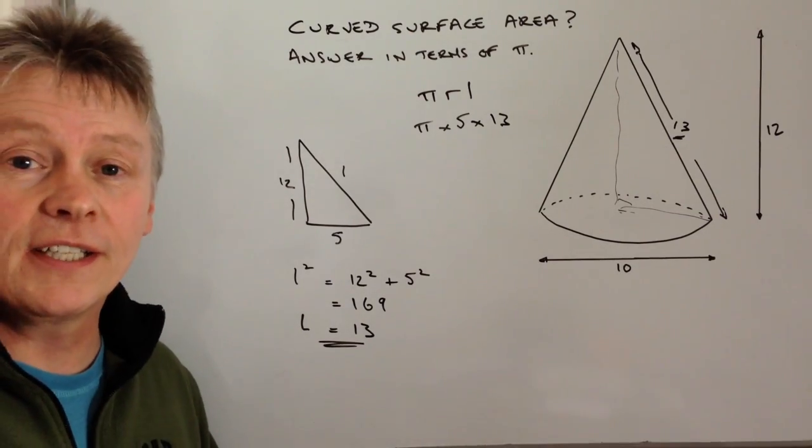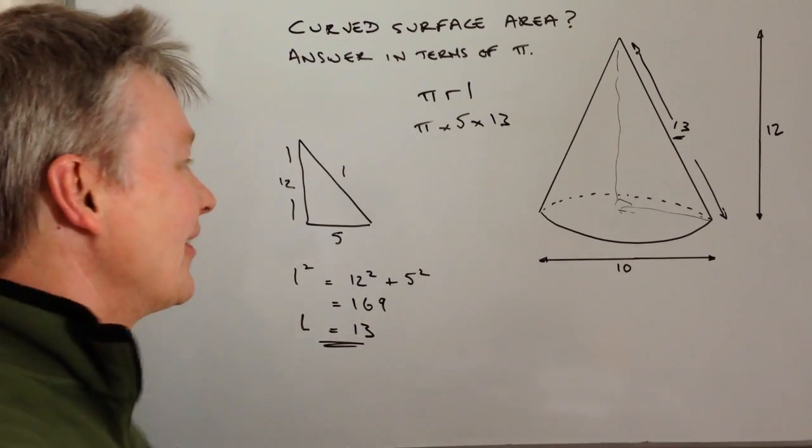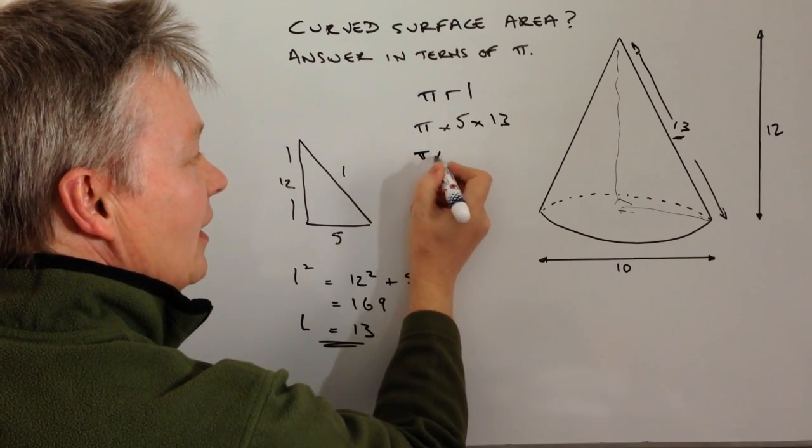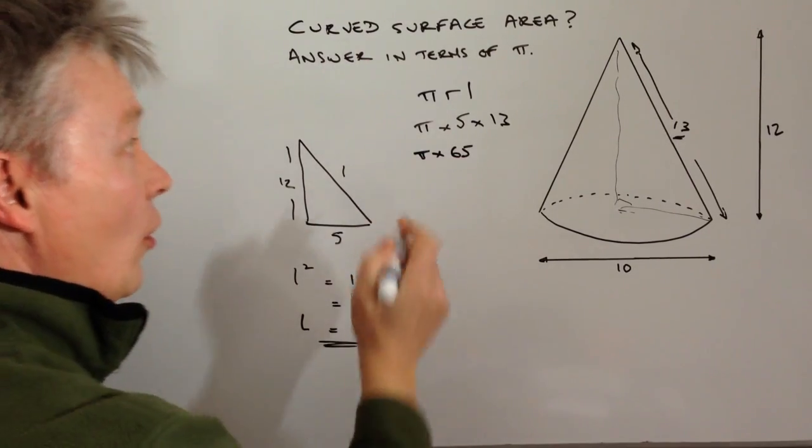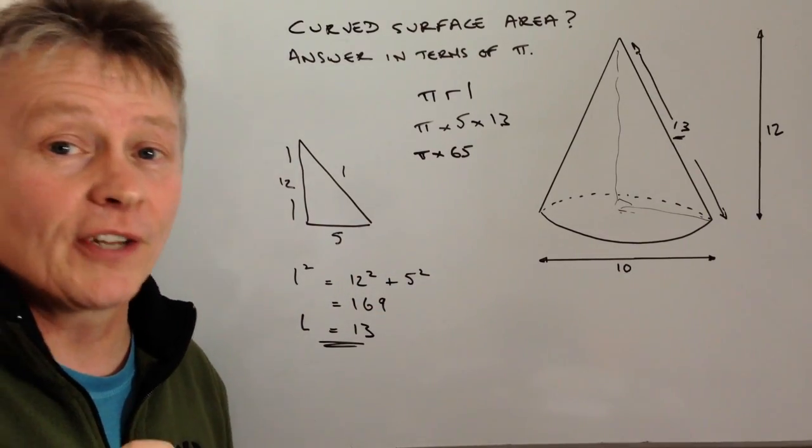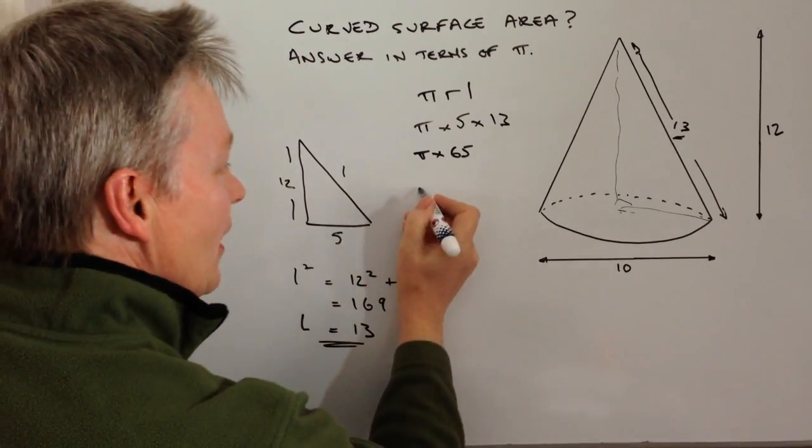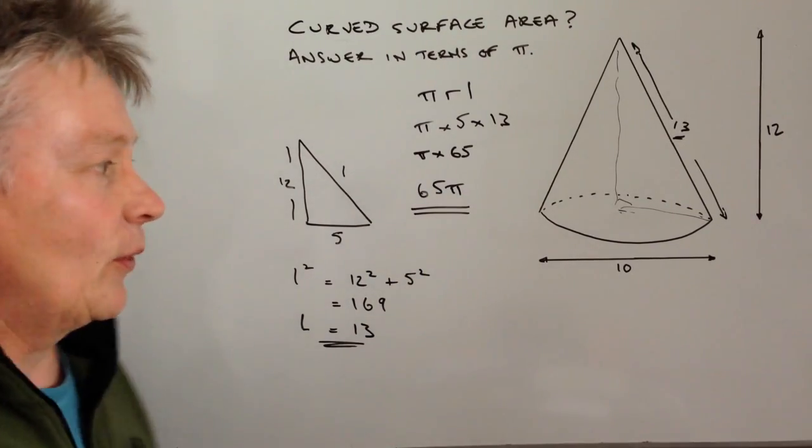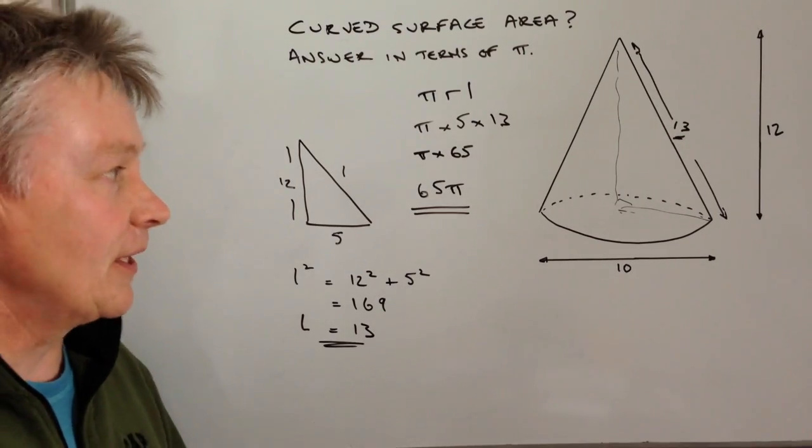Well, 5 times 13 is 65, so my answer to this question is π times 65, or the better way of answering that is to say the curved surface area is 65π.